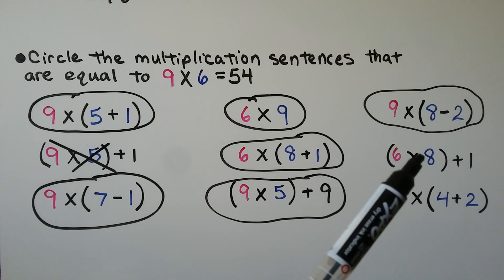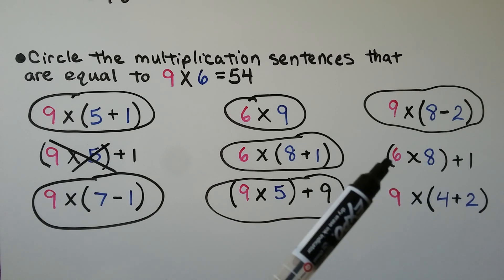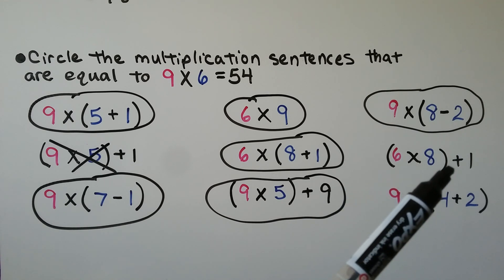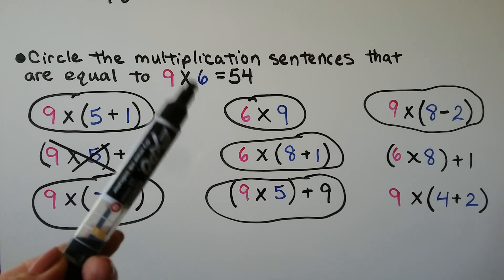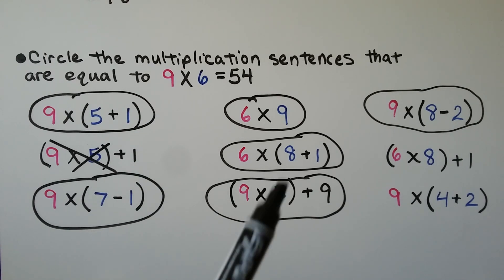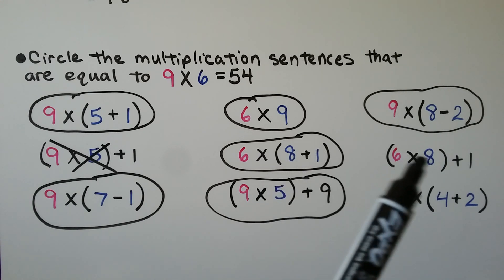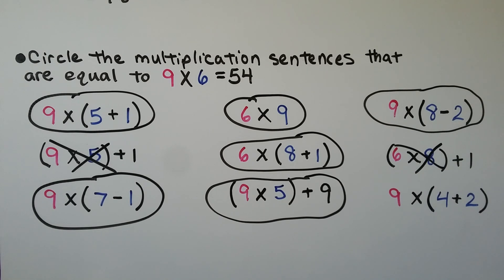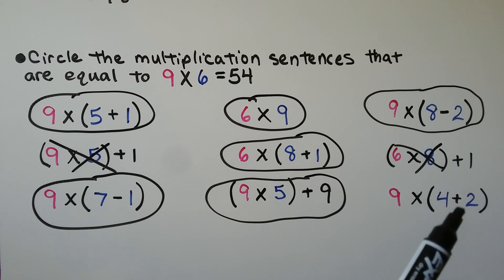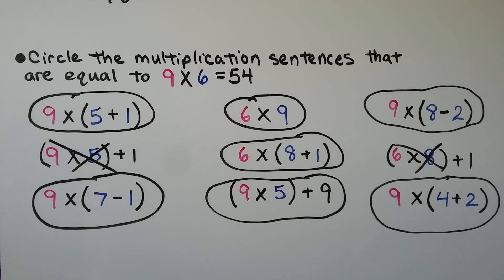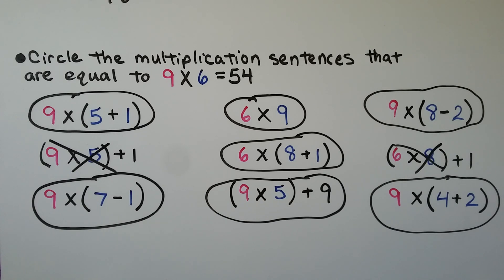What about (six times eight) plus one more? Six times eight is equal to 48. 48 plus one is 49, so no, that one doesn't work — it's not the same thing. The parentheses needed to be around the eight plus one, not the six times eight. What about nine times (four plus two)? Four plus two is equal to six, so we would have nine times six — that one is also a way of writing nine times six and is equal to 54. Depending on how they're grouped and what order they are in will determine if it's the same multiplication sentence and if they'll equal the same thing.